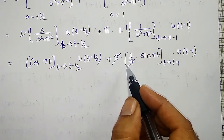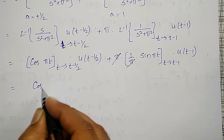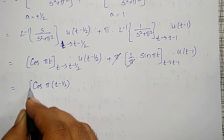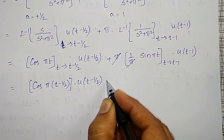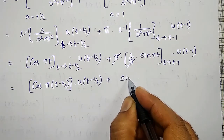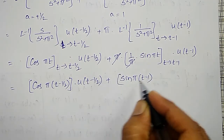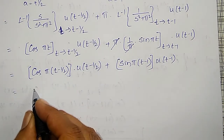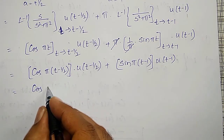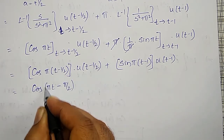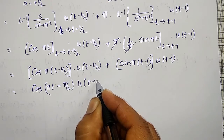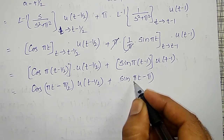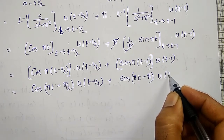Simplifying: we get cos of pi times (t minus 1 over 2) into u(t minus 1 over 2), plus sin of pi times (t minus 1) into u(t minus 1). Let us simplify these two using allied angles. cos(pi t minus pi over 2) into u(t minus 1 over 2), plus sin(pi t minus pi) into u(t minus 1). To apply allied angles, the angle should be first. Taking minus common inside cos, but cos of minus theta is cos theta, so I can write cos(pi over 2 minus pi t) into u(t minus 1 over 2). For the sine term, taking minus common: minus sin(pi minus pi t) into u(t minus 1).